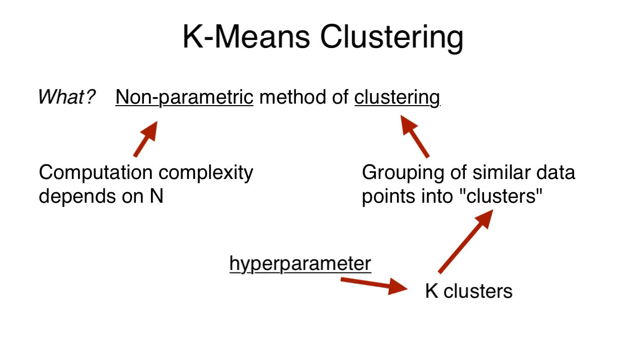So what's a hyperparameter? A parameter that is set by the programmer manually and it's not learned by the algorithm. In summary, k-means is a non-parametric method of clustering where we predefined the number of clusters. You got that? I know you got that. Now let's move to the algorithm.